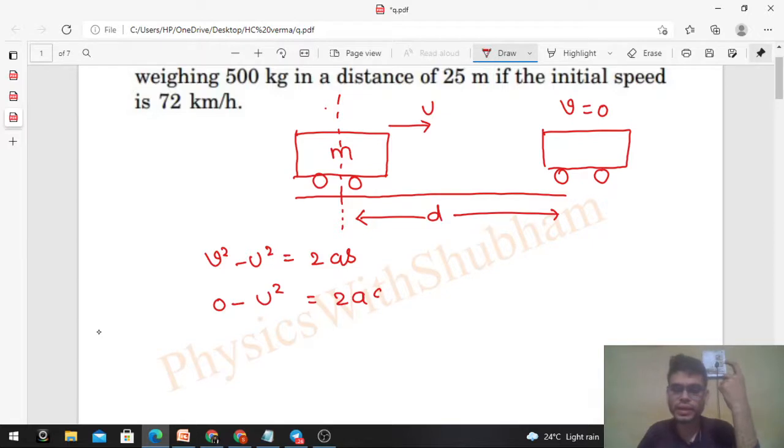From here a comes out as acceleration, and it will be negative: -u²/2d. Negative because it is retardation - your car is retarding. The friction force will act backward, so the speed will decrease and finally become zero. Therefore this negative acceleration indicates that actually your car is retarding.